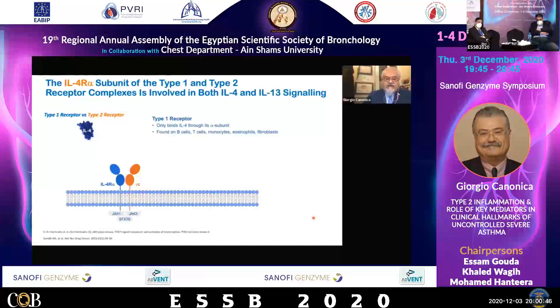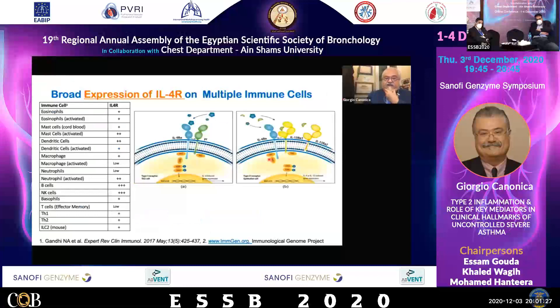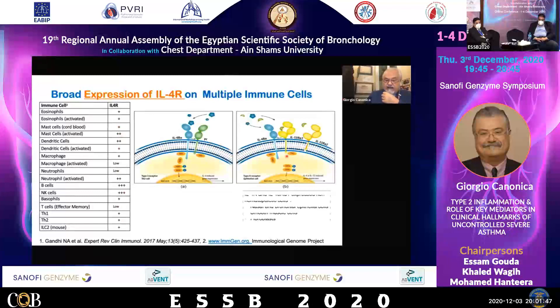How do IL-4 and IL-13 work? There is a receptor called type 1 receptor for IL-4 that binds just IL-4. But there is also a common chain for the receptor of IL-13. The receptor of IL-13 shares the alpha chain of the IL-4 receptor. That is the reason why both IL-4 and IL-13 work through this type 2 receptor. B cells and other cells highly bear these receptors.